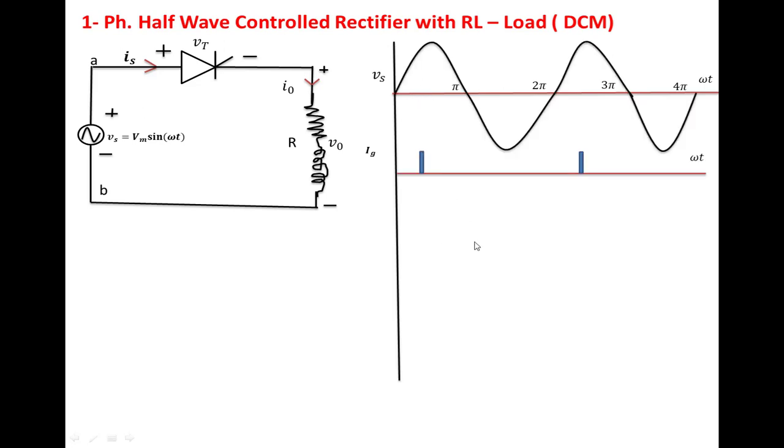We apply the triggering voltage to the SCR at the delay angle alpha. We start developing the output voltage waveform from alpha. At alpha, the SCR turns on, and current flows from the source through the SCR and load, returning to the source.